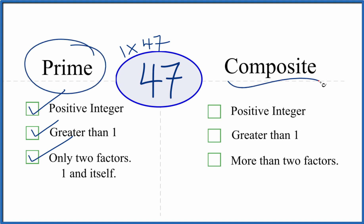But is it a composite number? Because it's a positive integer, greater than 1. But are there more than two factors that go evenly into 47?